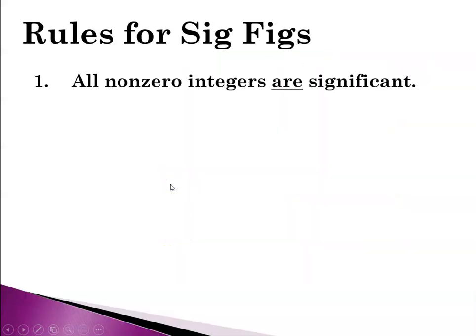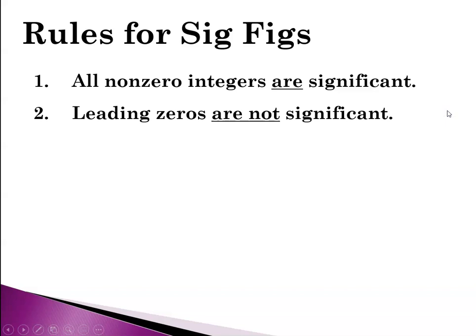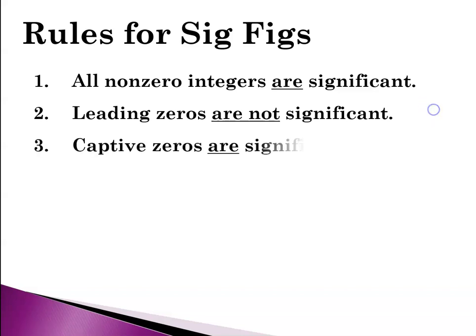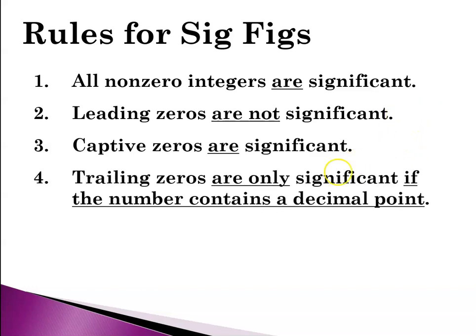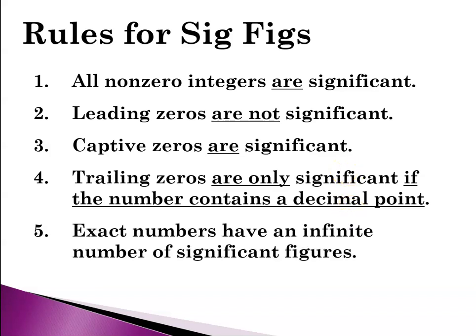So first of all, a reminder for the rules for sig figs: all non-zero integers are significant. Leading zeros are not significant. Captive zeros are significant. And trailing zeros are only significant if the number contains a decimal point. Exact numbers have an infinite number of significant figures.